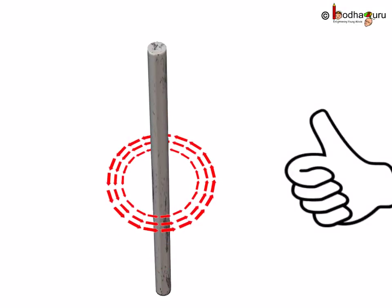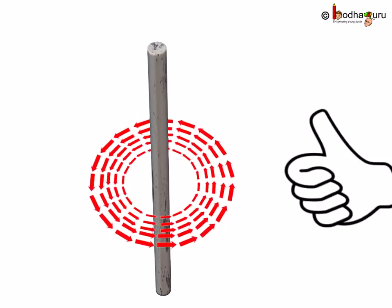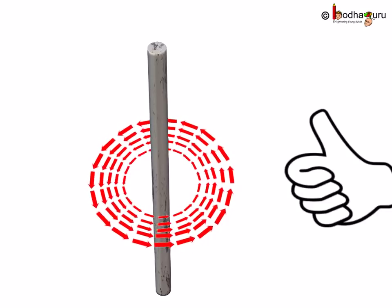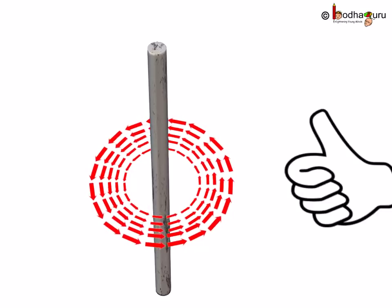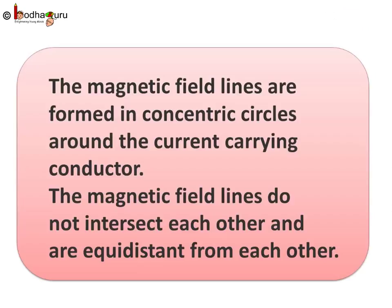And what about the direction of magnetic field? Well, applying the right hand thumb rule, we can say the direction of magnetic field in this case is anti-clockwise direction.